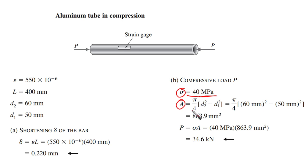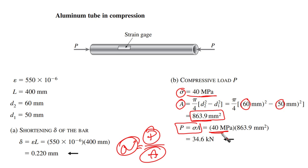π/4 (d₂² - d₁²). We have the outer 60, the inner 50 millimeters, so we are going to have the area to be 863.9 mm². Using this equation, as we know that stress always equals P over A, this means that if we want P, it will equal stress times the area - 40 megapascals times the area already calculated from the previous step.